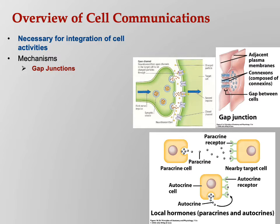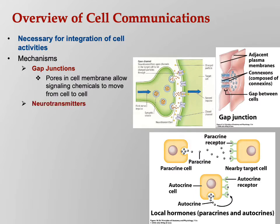Gap junctions, remember from Bio 156, allow ions and other things to move directly from one cell into another. Neurotransmitters — remember the nervous system — one neuron releases neurotransmitters which bind to receptors on another neuron. That's how a neuron tells another neuron to engage in some activity, to send off action potentials that will cause something to happen.